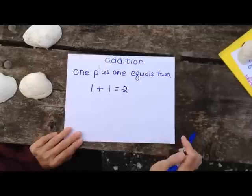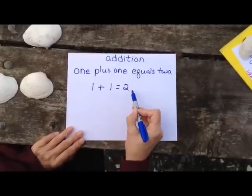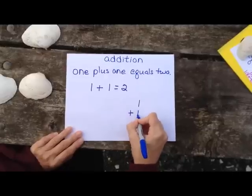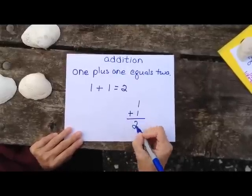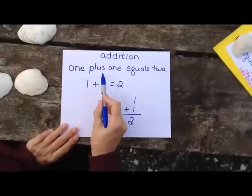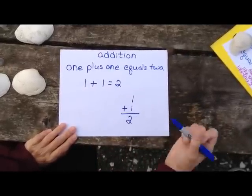When I write my problem, I can write it with words, I can write it with numbers horizontally, or I can write it with numbers vertically, like this. I read it the same way. One plus one equals two.